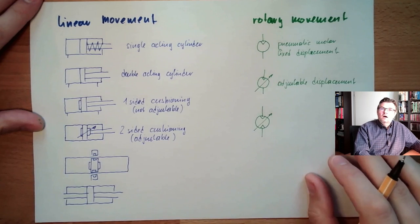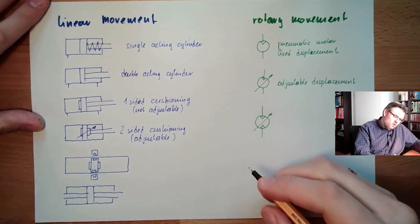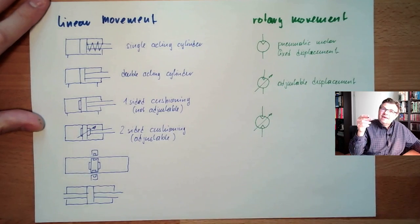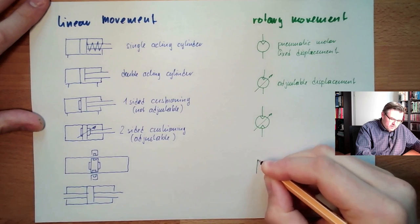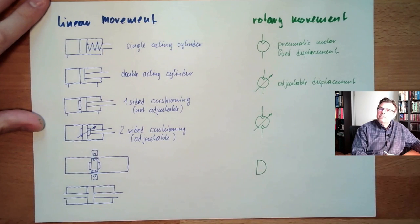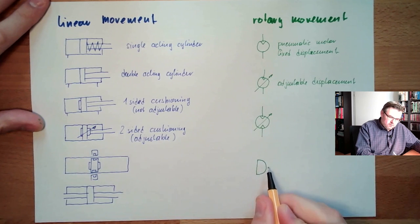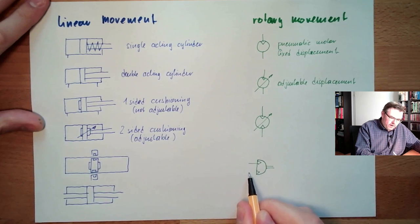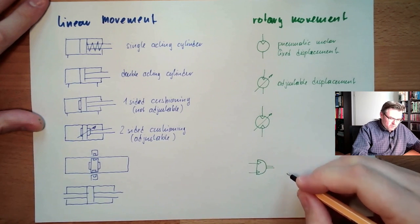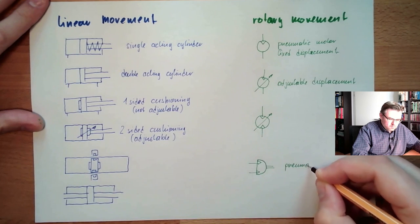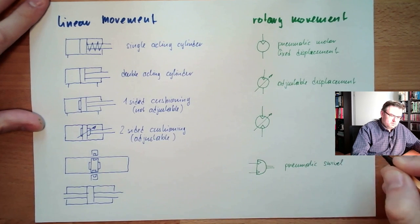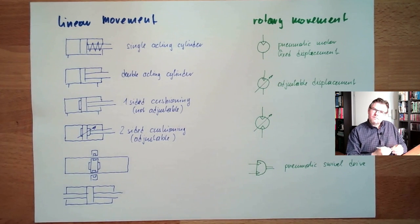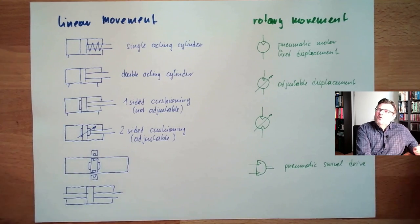And then we also talked about rotary or swivel drives. Swivel drive, since they are not full, this is 360, this can turn. To indicate that it's not able to turn fully, a swivel drive usually is only half, the symbol is only half circle. Here's the axis which will move, and then we can move it left, we can move it right, and here are the two connectors. So this is pneumatic swivel drive.